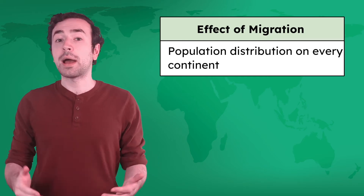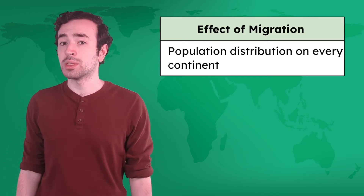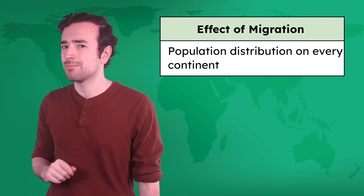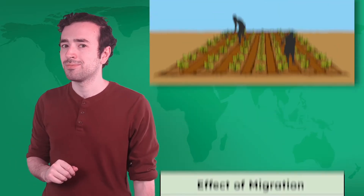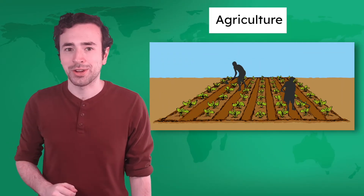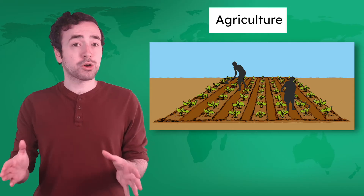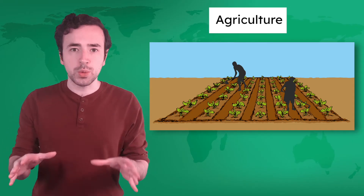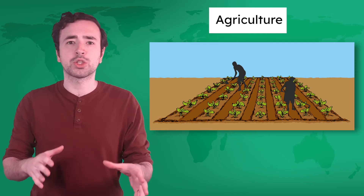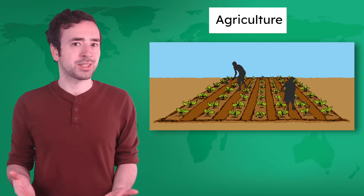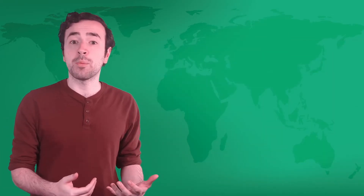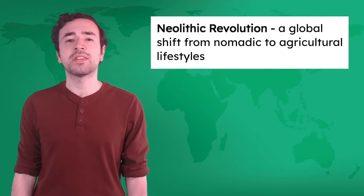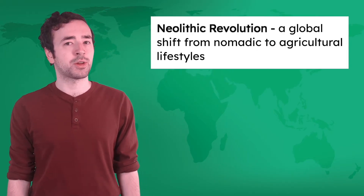But a groundbreaking innovation changed how humans lived forever — agriculture. Agriculture allowed humans to settle in geographic sweet spots: places with good climate, soil, and access to water. This shift from a nomadic to agricultural lifestyle is called the Neolithic Revolution.